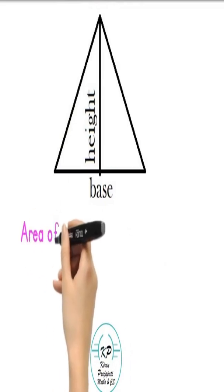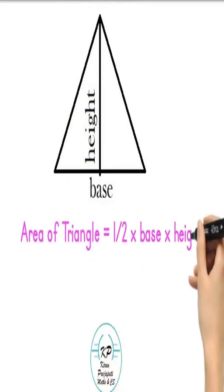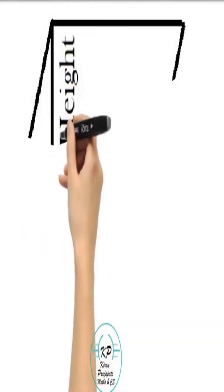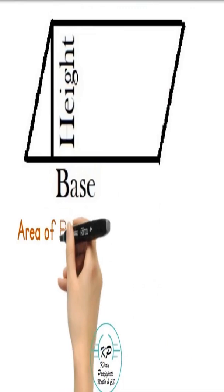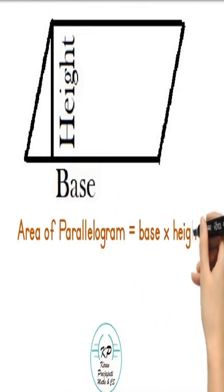Area of triangle is half into base into height. Area of parallelogram is base into height.